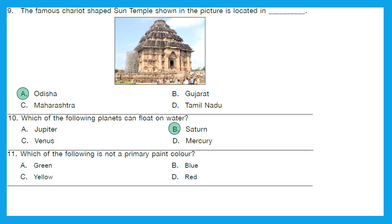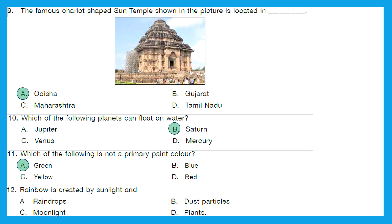Question 11: Which of the following is not a primary paint color? Recall the three primary colors — yellow, blue, and red. Which one is not among them? It is green — option A. Green is a secondary color, not a primary color. Question 12: The rainbow is created by sunlight and raindrops.